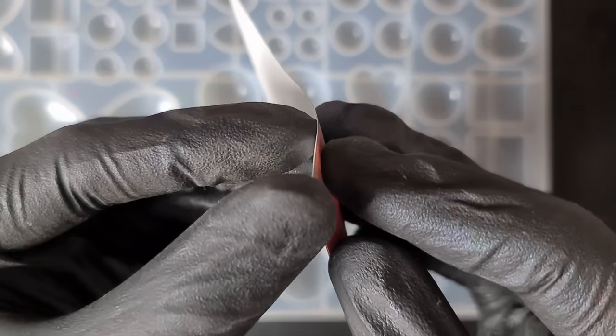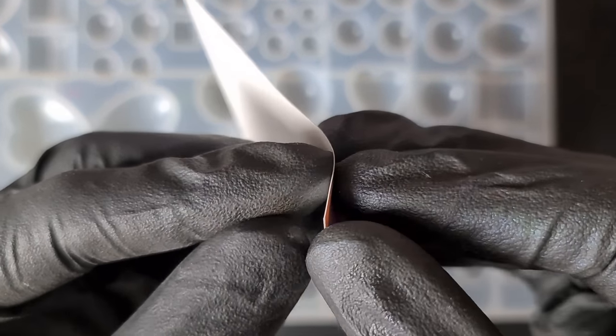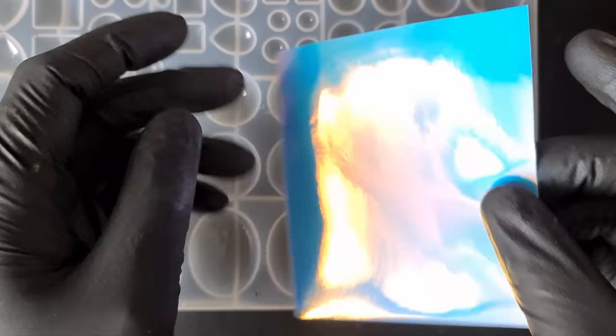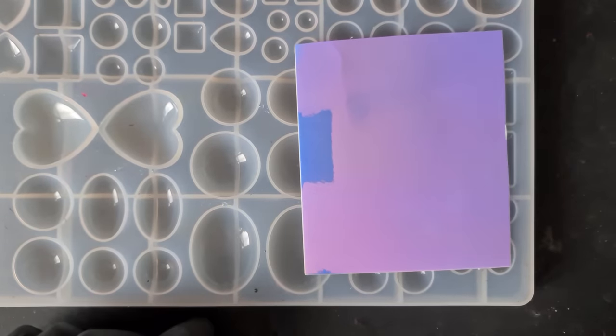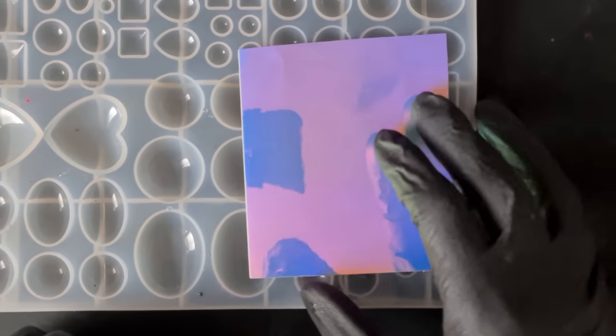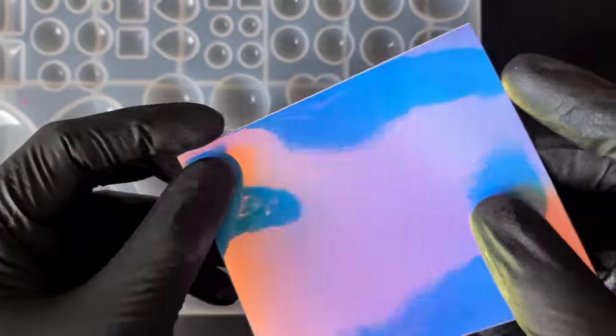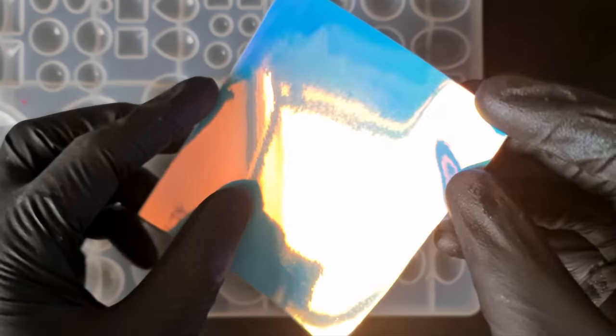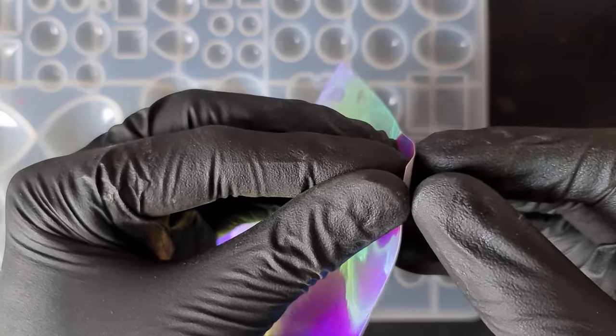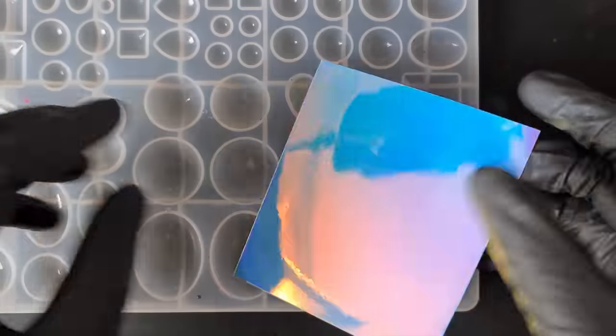But what I do have is some leftover vinyl. This is the peelable vinyl, just from a cheap set, and I have some clear cellophane. So what I plan to try is trying to get the effect with this. I don't think it's going to work the same, but to make it easier to handle, I think what I'm going to do is cut some cellophane off.